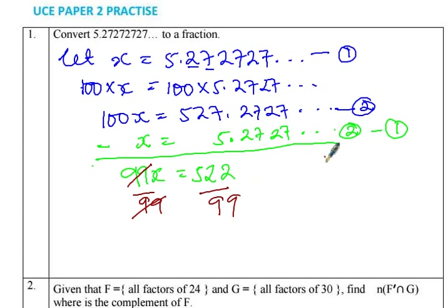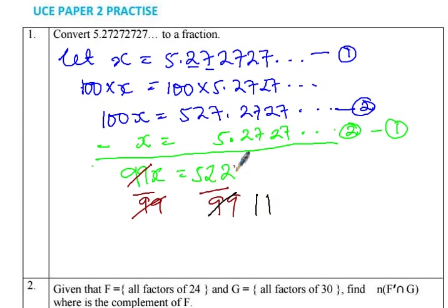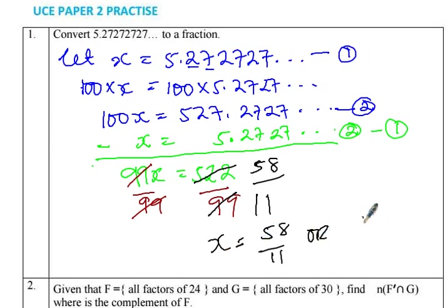The only thing we need to do is simplify. We use common factors. When I look at 99, I can divide by 9. I also try to see if 9 is a factor of both. Feel free to start with smaller numbers like 3 since we have 99 — when we sum the digits we get 9, which is divisible by 3. In this case, dividing by 9 gives 11 in the denominator and 58 in the numerator. So our final answer is 58 over 11, or as a mixed number, 5 and 3 over 11.